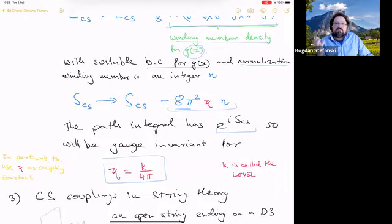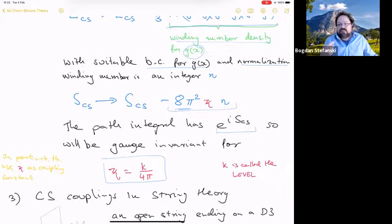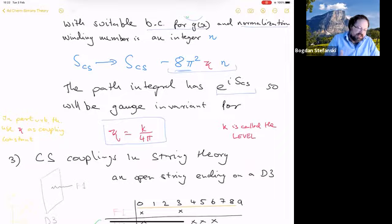The well-known story in Chern-Simons theory is that the action is not invariant under large gauge transformations, but that's not a disaster — you're not really interested in the action, you're interested in the exponential of the action. That's gauge invariant as long as you make this quantity proportional to 2πi times an integer. What that translates to is that kappa is actually an integer divided by 4π. In perturbation theory, when you're doing Feynman diagrams, you treat kappa as a coupling constant, expand in it, and calculate diagrams, then set it to an integer divided by 4π at the end.